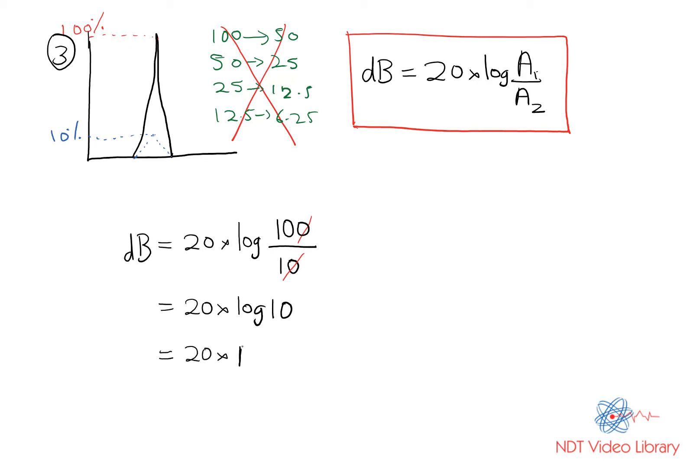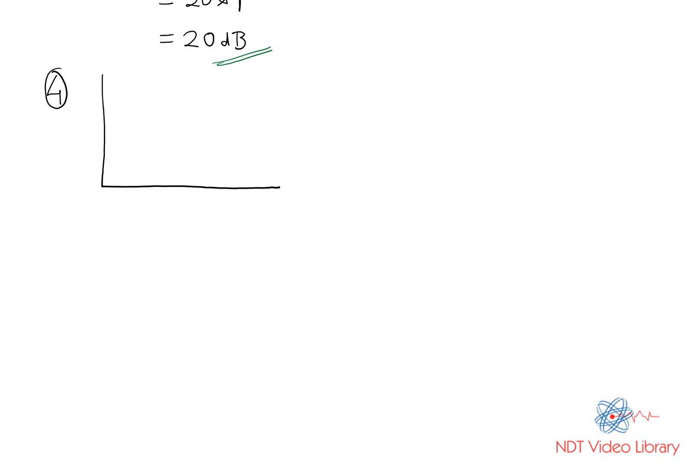Let's consider another example where the signal amplitude is initially 80 percent and you take off 14 decibels. Then what would be the final signal height?